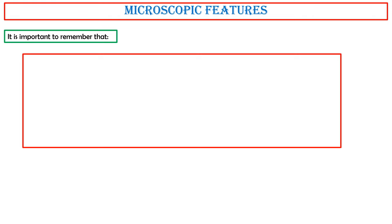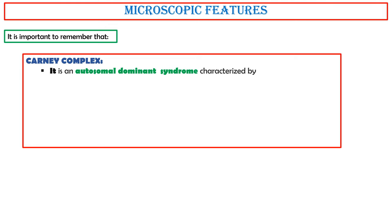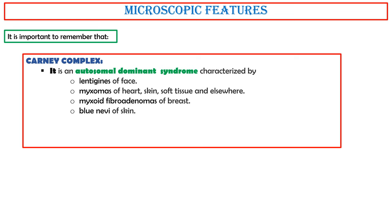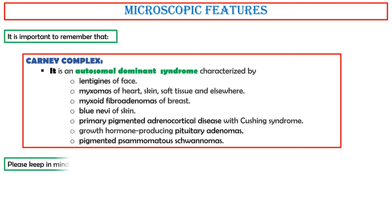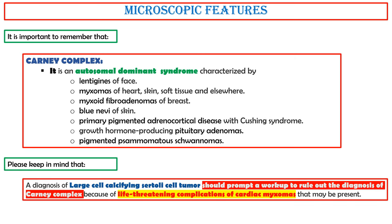It is important to remember Carney complex. It is an autosomal dominant syndrome characterized by: lentigines of the face; myxomas of the heart, skin, soft tissue, and elsewhere; myxoid fibroadenomas of the breast; blue nevi of the skin; primary pigmented adrenocortical disease with Cushing's syndrome; growth hormone-producing pituitary adenomas; and pigmented psammomatous schwannomas. A diagnosis of large cell calcifying Sertoli cell tumor should prompt a work-up to rule out Carney complex, because of life-threatening complications of cardiac myxomas that may be present.